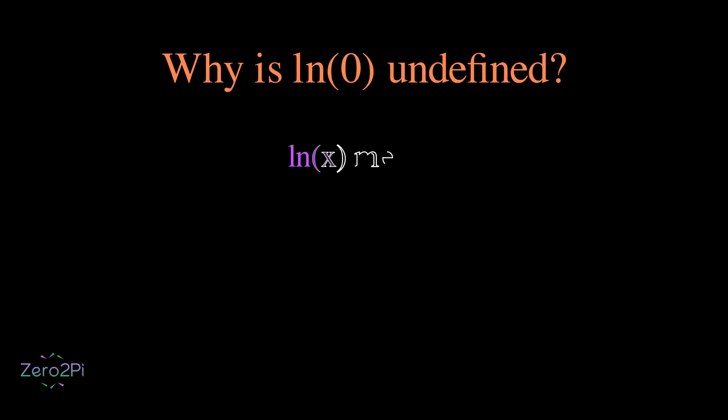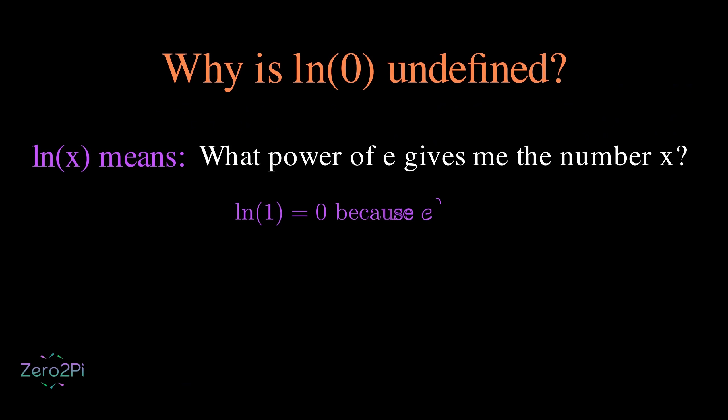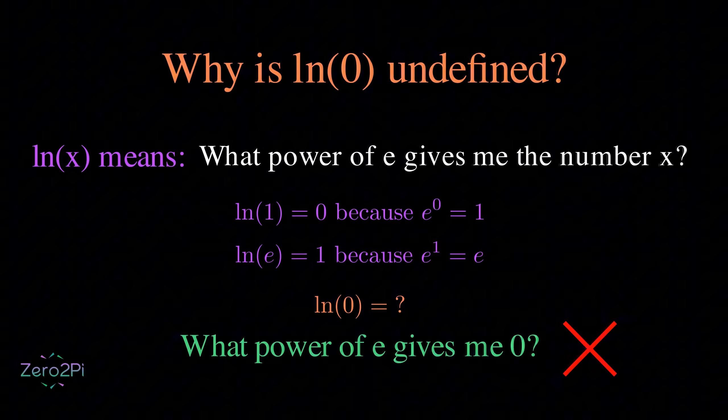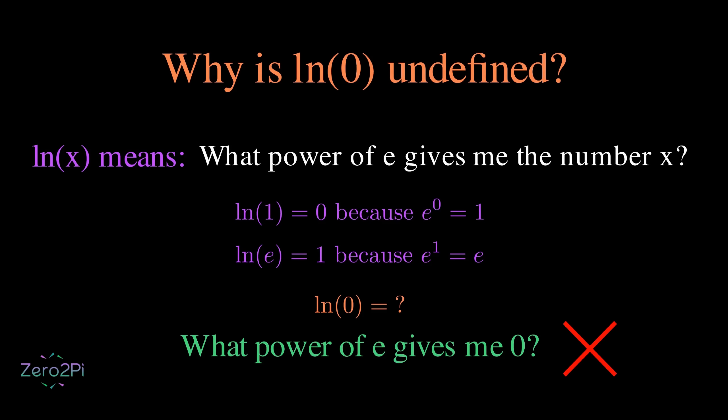Natural log of x is simply the answer to the question, what power of e gives me the number x? For natural log of one, the answer is zero, because e to the power of zero is one. So for natural log of zero, we're asking what power of e gives me zero? And the answer is nothing. No matter what power we use, e will never become zero.